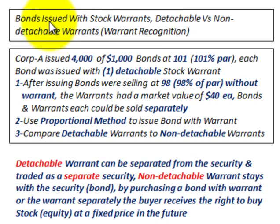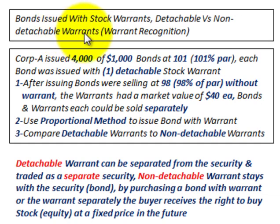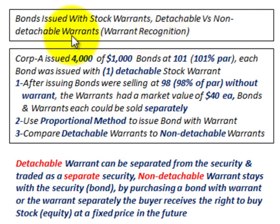What we're going to be going over here are bonds issued with stock warrants. We're going to be looking at detachable versus non-detachable warrants, and comparing the warrant recognition between the detachable and the non-detachable warrants when they're sold.